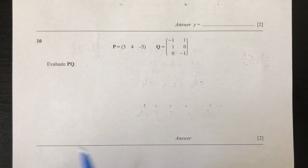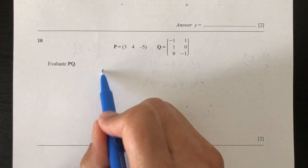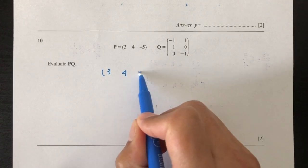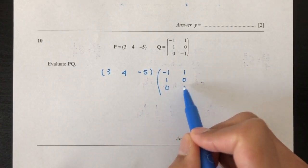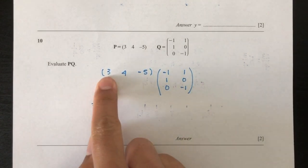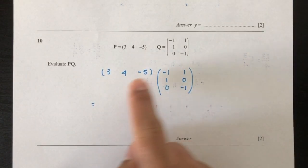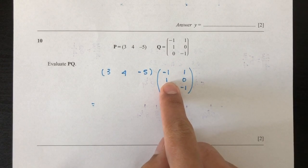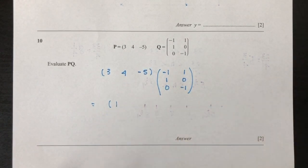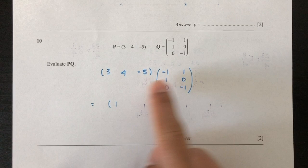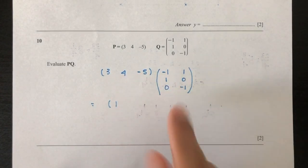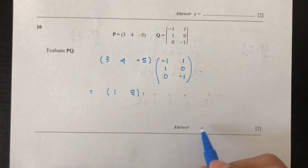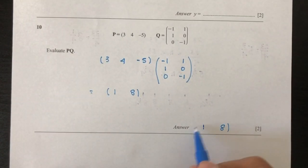Now question number 10. Find PQ — matrix multiplication is always rows by columns. The rows of P are (3, 4, -5) and the columns of Q give (-1, 1, 0) and (1, 0, -1). So: 3 times -1 is -3, plus 4 is 1, plus 0 is 1. Then 3 times 1 is 3, plus 0 is 3, plus 5 is 8. So the result is the matrix with entries 1 and 8.